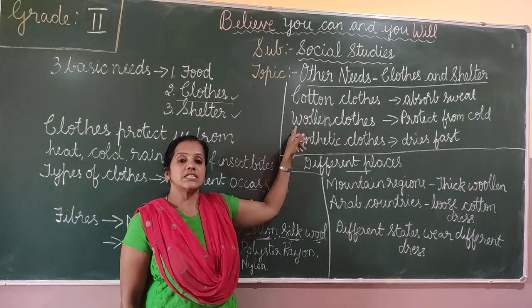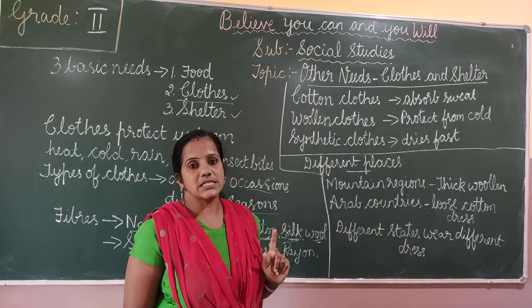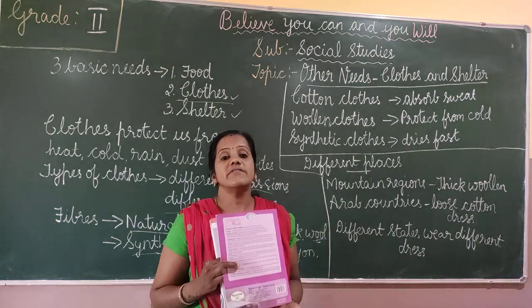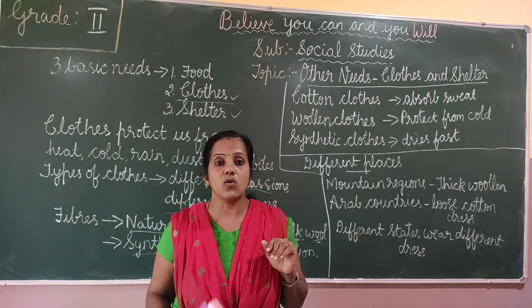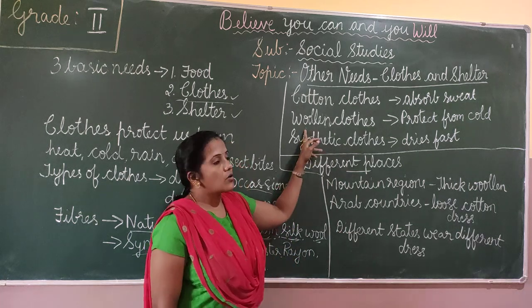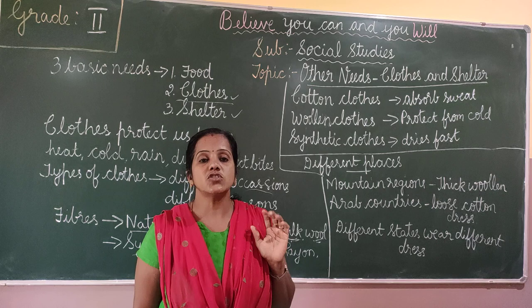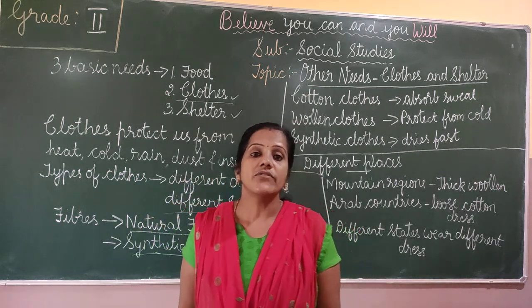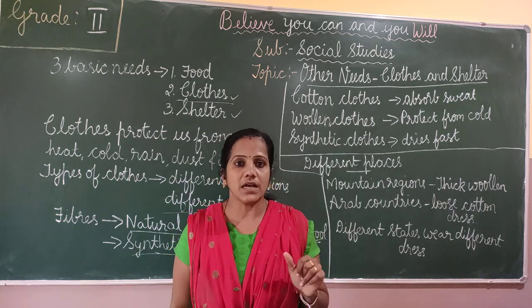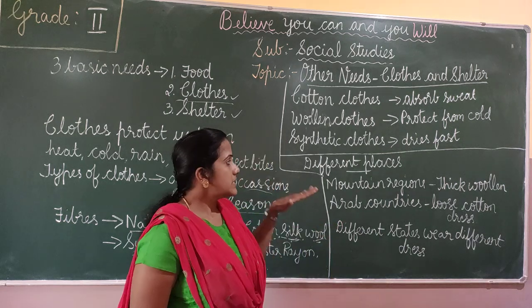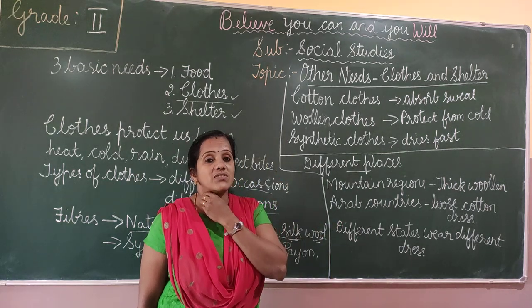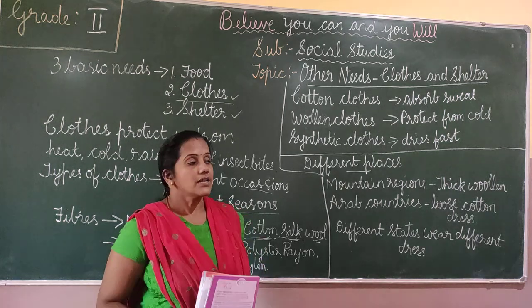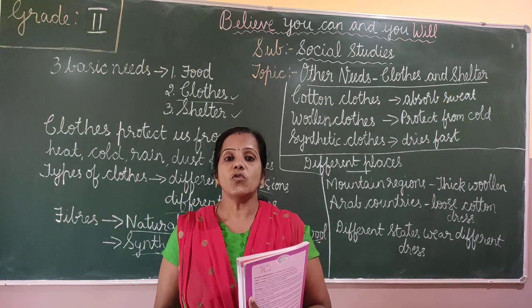Next is woolen clothes — we wear these in winter season. In winter it is too cold, so we wear woolen clothes, sweaters and mufflers to cover our body and protect from cold. During rainy season we use raincoats and umbrellas to protect from rain — these are made up of synthetic materials which dry up very fast.